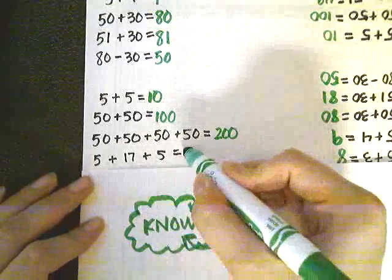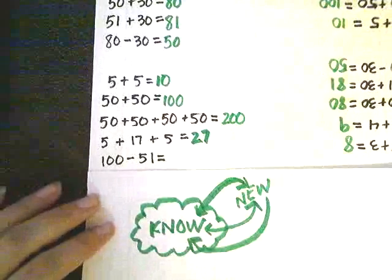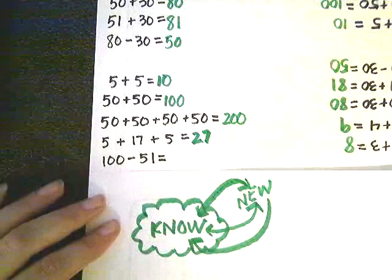Now I have 51 plus 30. Well, if I know 50 plus 30 is 80, I know 51 plus 30 would be just one more, 81.